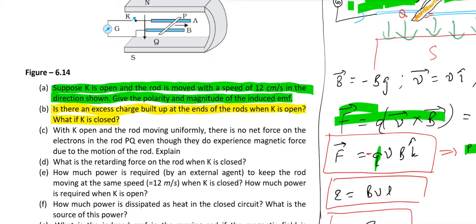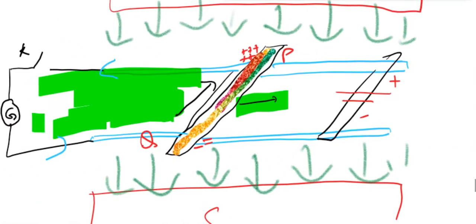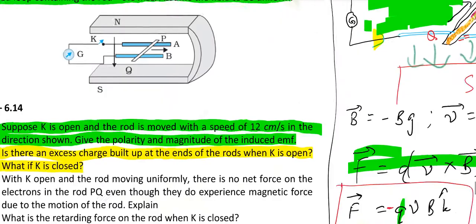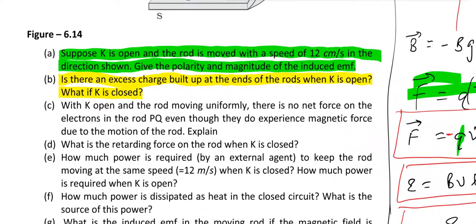What if K is closed? If K is closed, then obviously there will not be any gathering of charges as shown here. Charges will flow via this path and then you don't have any extra charges at P or Q end. You will have current setup and charges are uniformly distributed.